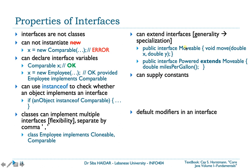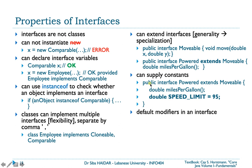You can also extend interfaces, going from generality to specialization. For example, consider a public interface Movable with one method: void move(double x, double y), providing the abscissa and ordinate to which you want your object to move. You can then declare an interface Powered that extends Movable, inheriting the move method and adding another abstract method called milesPerGallon. Any class implementing Powered also implements Movable by inheritance.